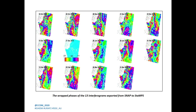In the course of the PSI technique, after preparing all the data in SNAP software, all wrapped interferogram phases were exported to STAMPS. We can note from these wrapped phases that they contain patterns of narrow rings, indicating the presence of remarkable ground surface deformation at this location.